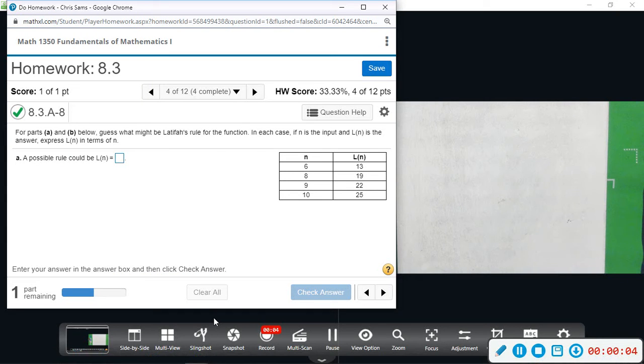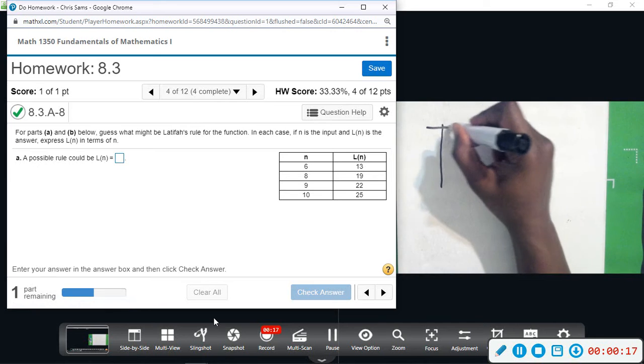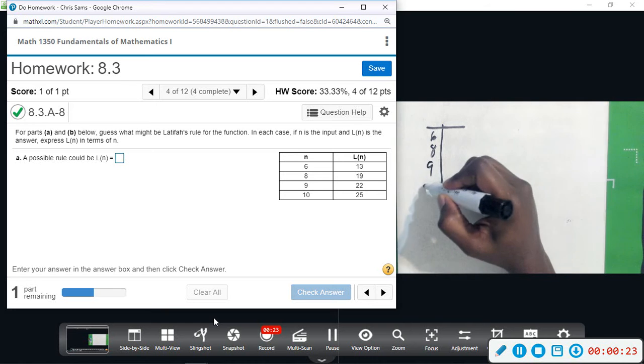All right, number four. For parts A and B, we want to guess what might be Latifah's rule for the function. What I'm going to do is just kind of see what this is counting by, so I'm going to make a table. We start with six, and then we skip to eight, and then we have nine and ten.